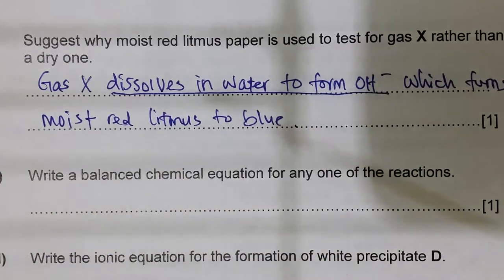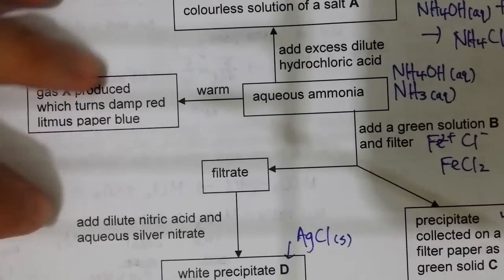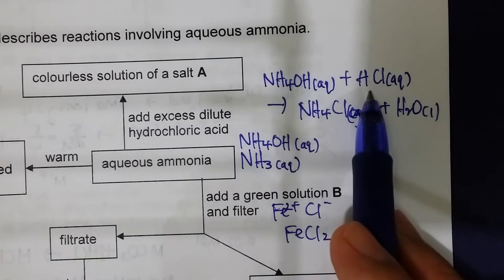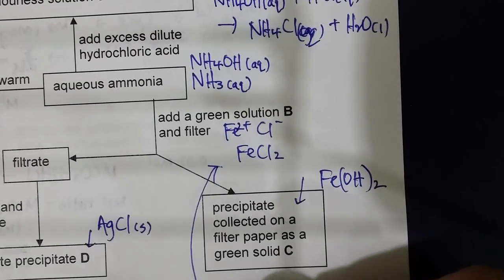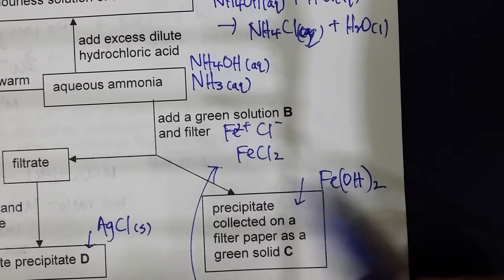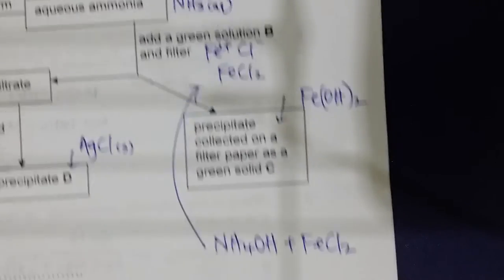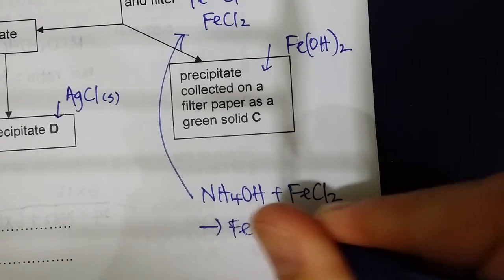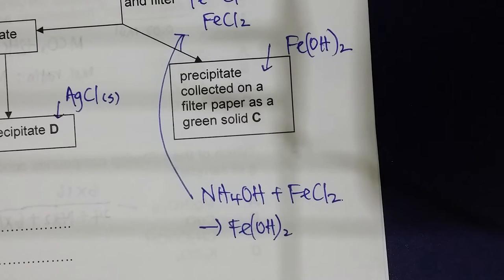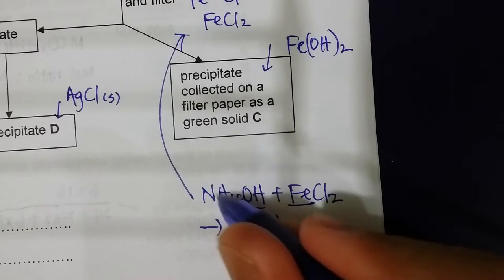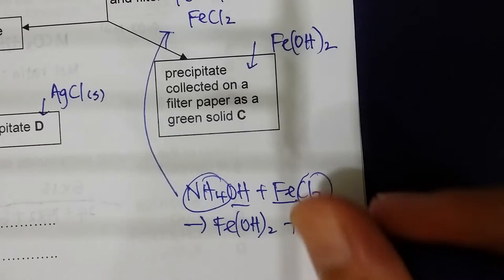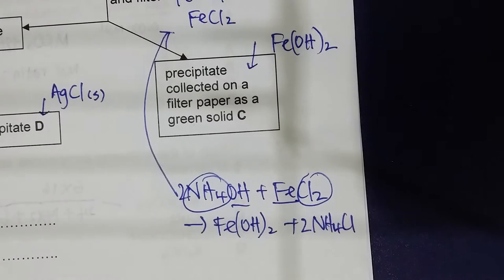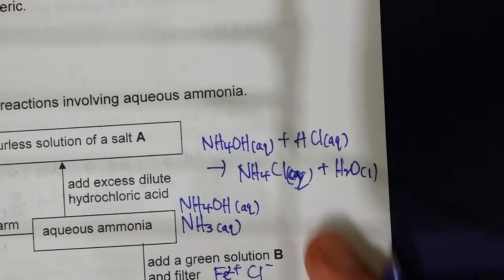Write a balanced chemical equation for any one of the reactions. One option: NH₄OH(aq) + HCl(aq) → NH₄Cl(aq) + H₂O(l). Another option is the reaction of aqueous ammonia with iron(II) chloride: NH₄OH(aq) + FeCl₂(aq) → Fe(OH)₂(s) + NH₄Cl(aq), which can be balanced accordingly. Both are valid answers.